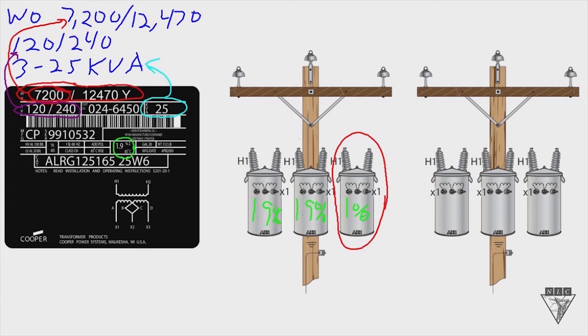So you want to try and find three transformers that have impedance that are very close together. Some companies will give it a plus or minus 5% range, but check with your company just to find out what they require.